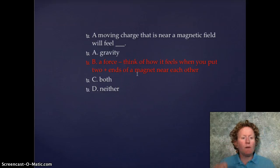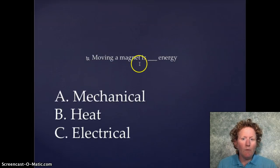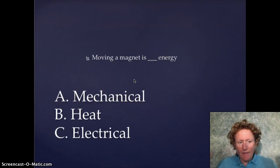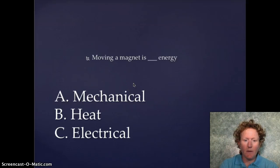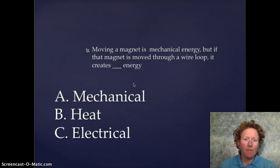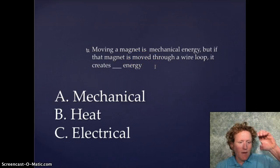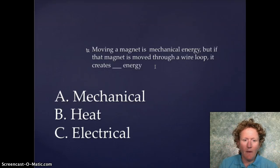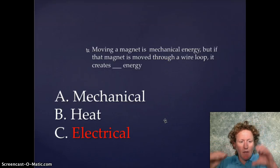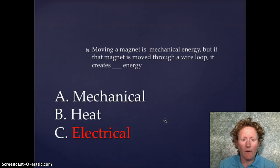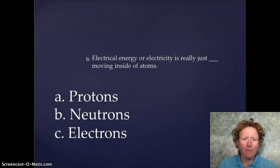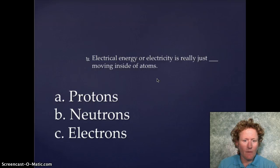Moving a magnet uses mechanical energy — just like doing curls. But if a magnet is moved through a wire loop or coil, you are creating electrical energy, because you're influencing the direction and behavior of electrons in the wire. Electricity is really just electrons moving inside of atoms — if you guessed electrons, you were correct.